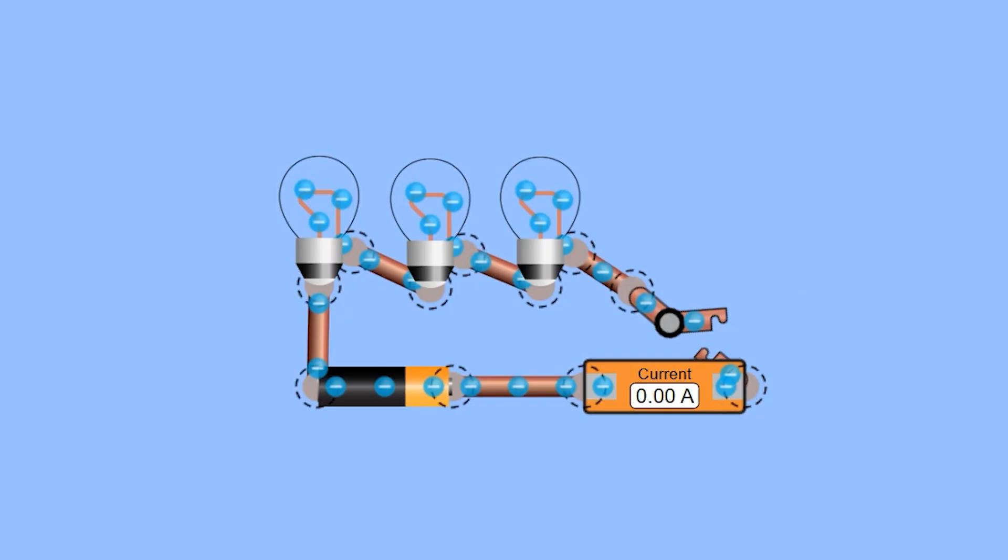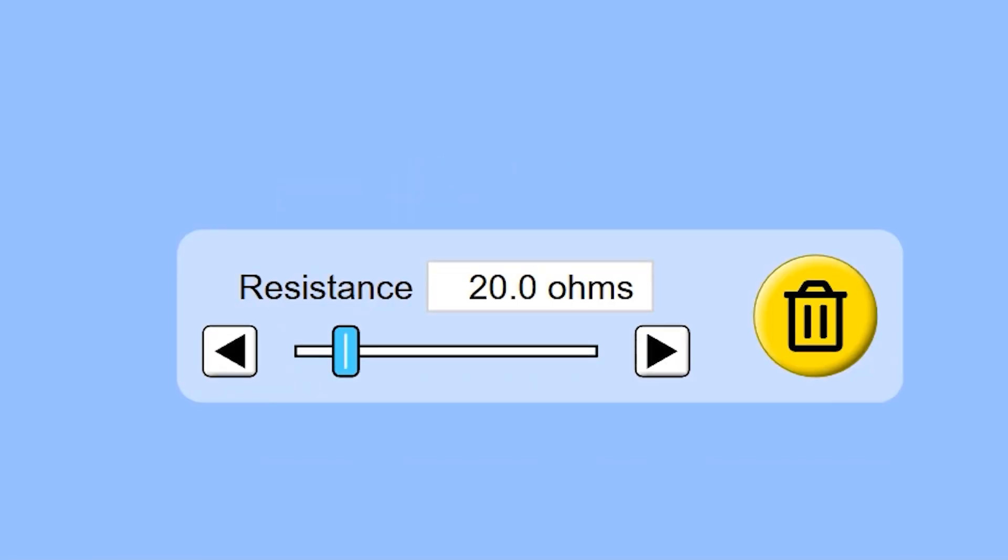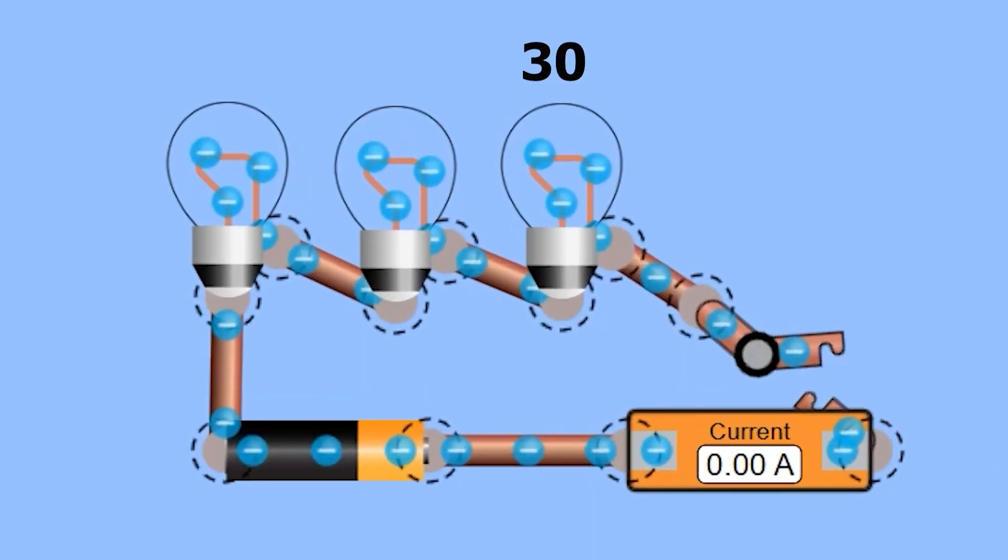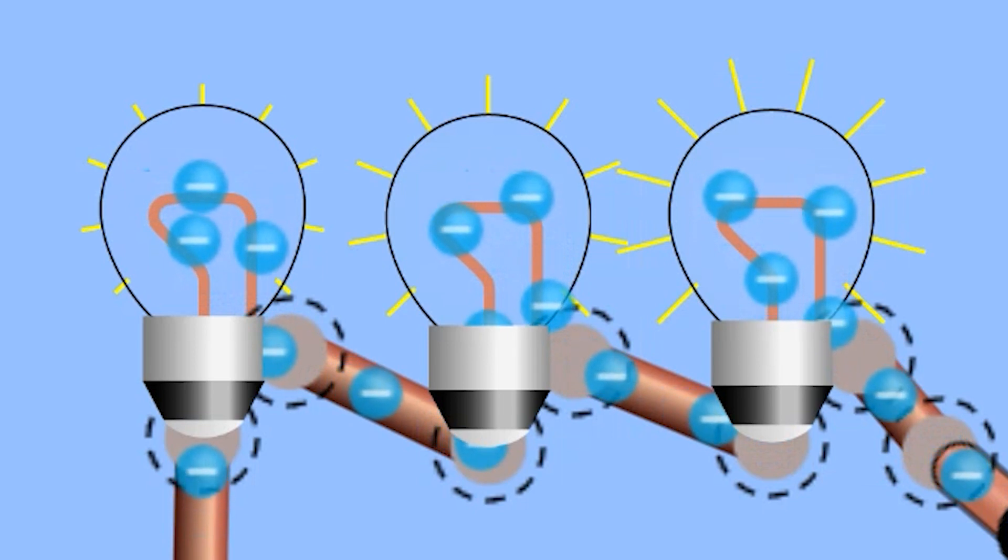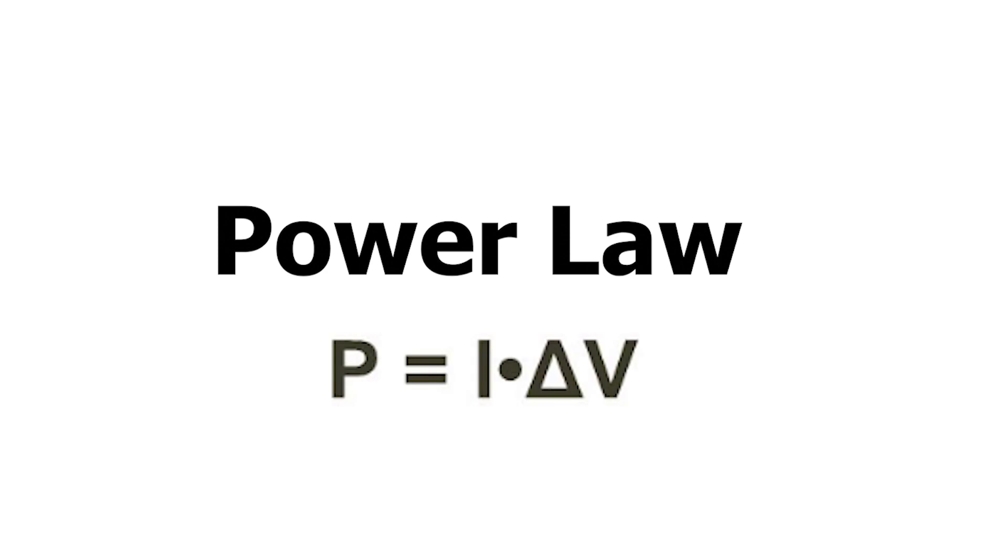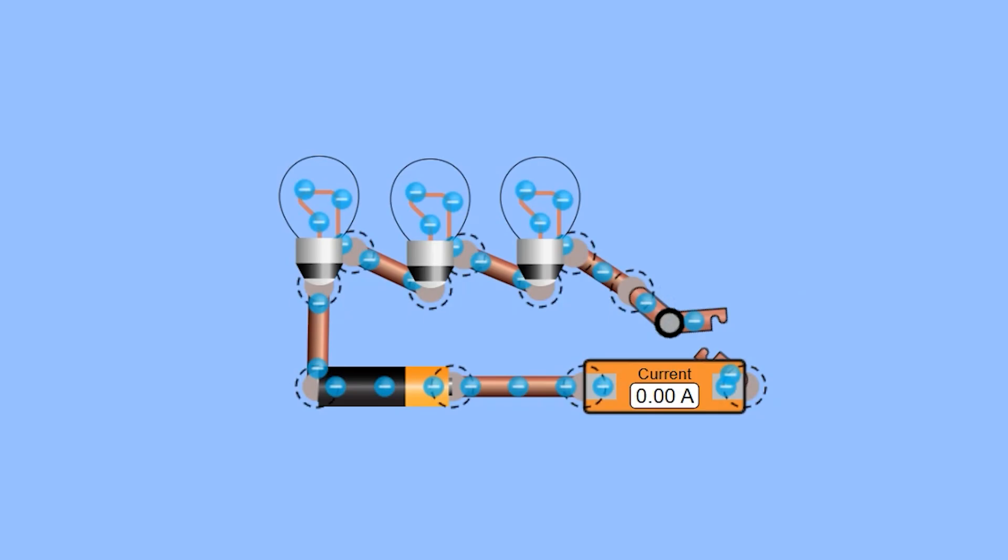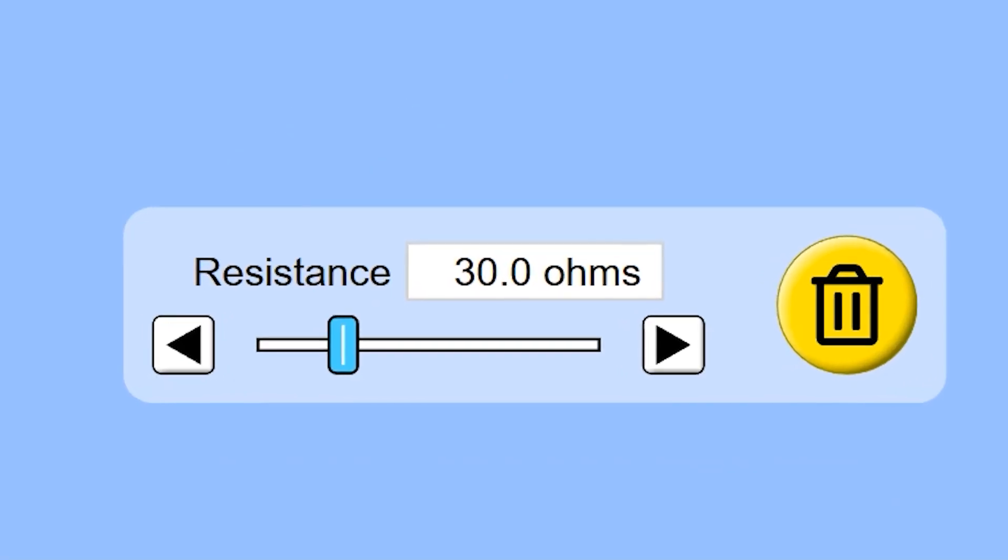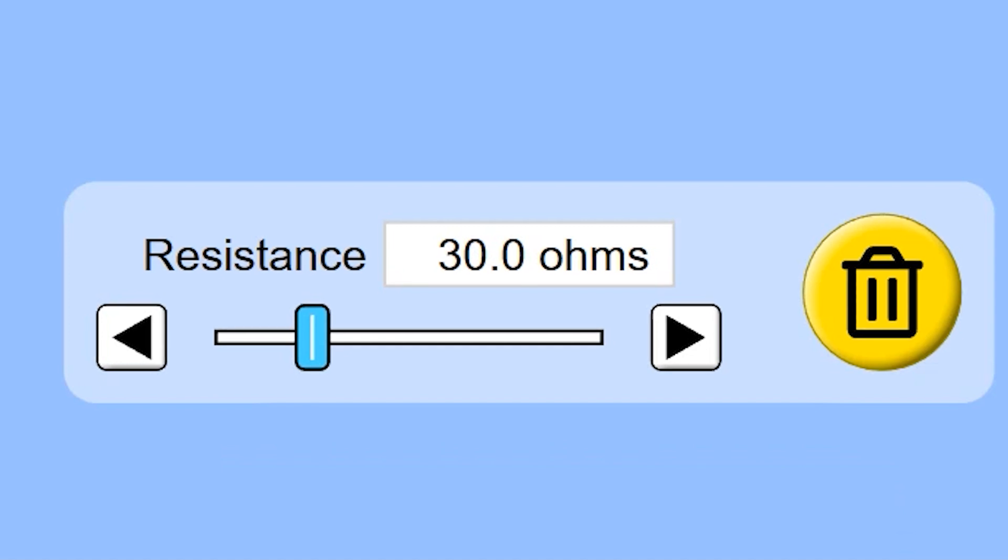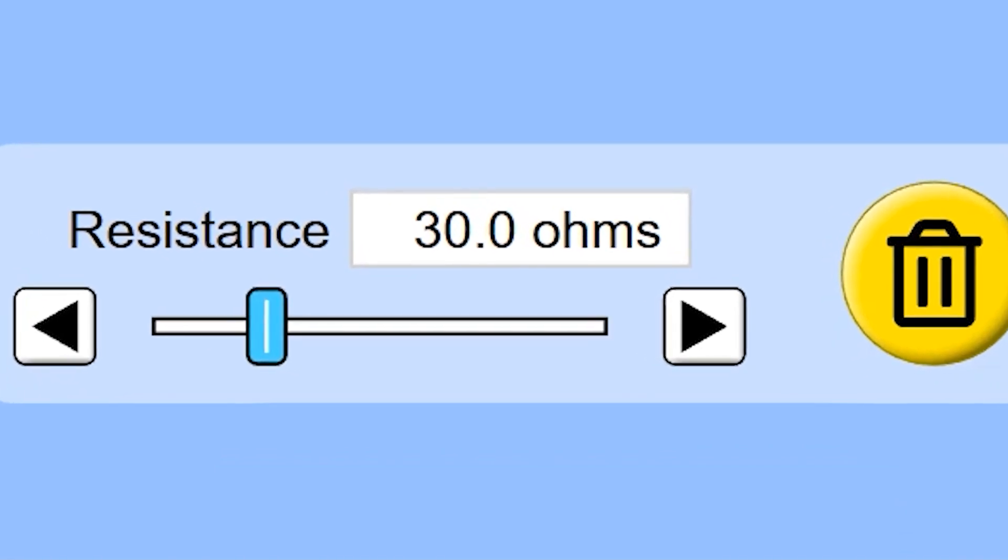When we arrange three bulbs with resistances of 10 ohms, 20 ohms, and 30 ohms in series, the bulb with 30 ohms should shine the brightest because it has the highest resistance. The brightness of each light bulb is determined by the power it consumes, which is calculated with the power law formula P equals I delta V. The voltage across each component is directly proportional to its resistance, so the light bulb with the highest resistance will have the highest voltage drop across it and will dissipate more power.